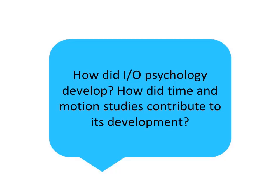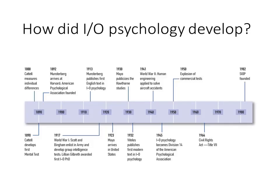In the next part of this lecture, we are going to explore the history of IO psychology. More specifically, how the Gilbreths' time and motion studies contributed to its development. Here is a timeline of some of the most important events in IO psychology's history.